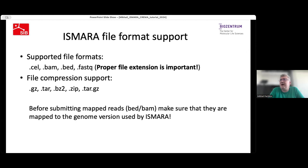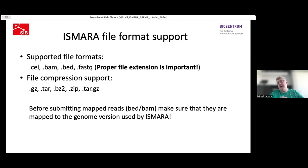The supported file formats are CEL, BAM, BAT, and FASTQ. It's very important that files have the correct file extension, because in ISMAR files are recognized by their extension. ISMAR also supports files compressed in different forms — zipped, tar, gzipped, and so on. You can submit an archive containing FASTQ, BAT, or CEL files, and it will be automatically decompressed with files properly extracted and analyzed.